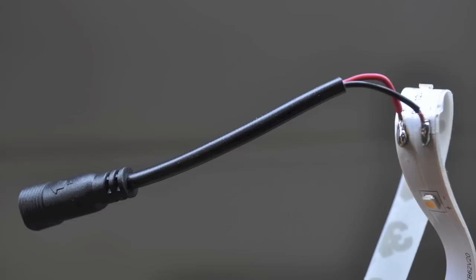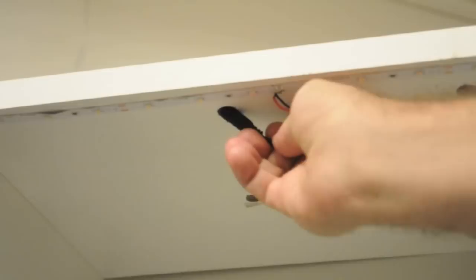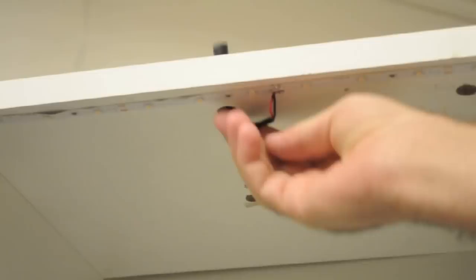Using your step bit, drill a 3⅛ inch hole at the front top center of the cabinet box. Poke your mid connector through the hole and terminate the power on top of the cabinet.